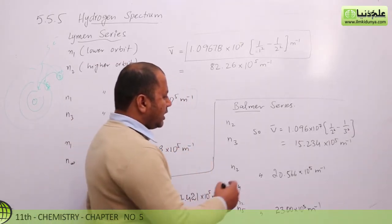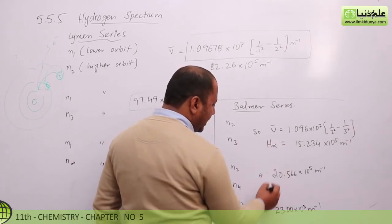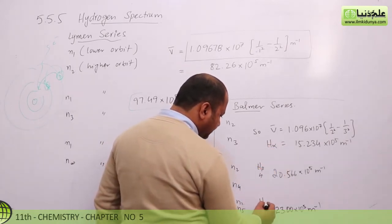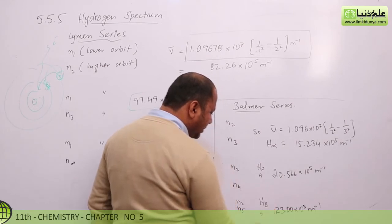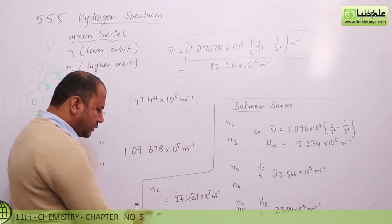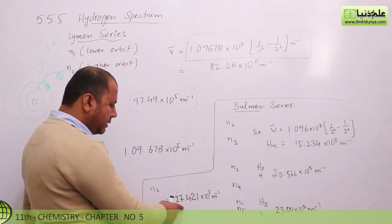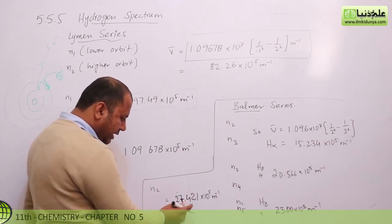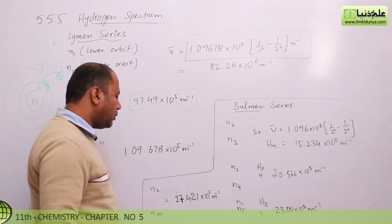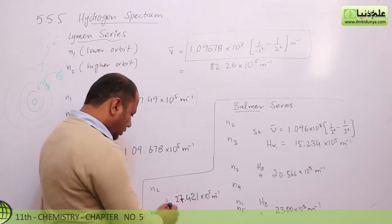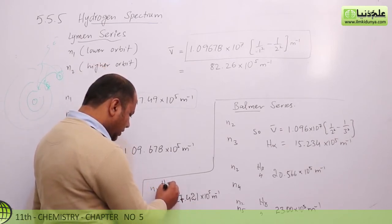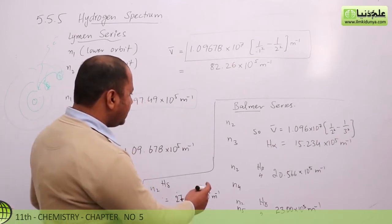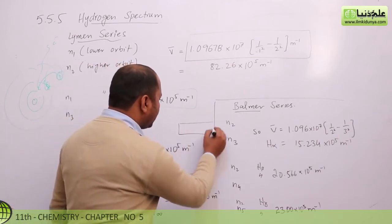Balmer has hydrogen alpha, hydrogen beta, and hydrogen gamma. And these are the lines — if you can see the lines that are shown in a spectral line.